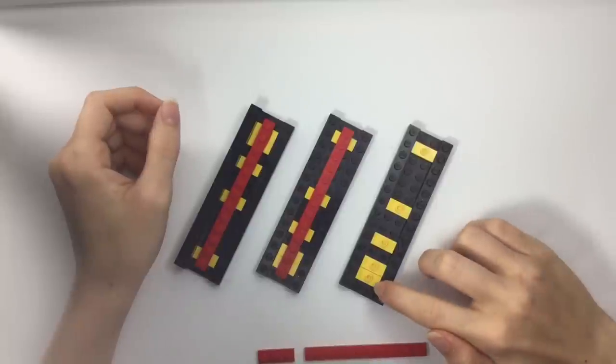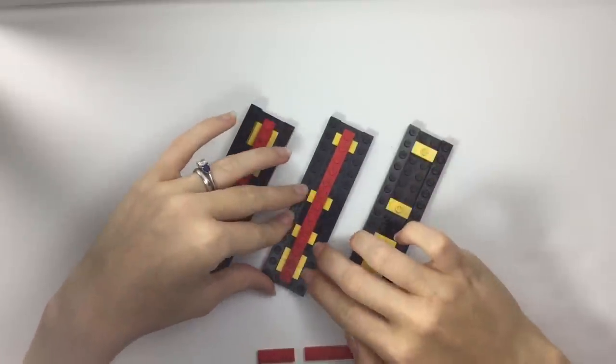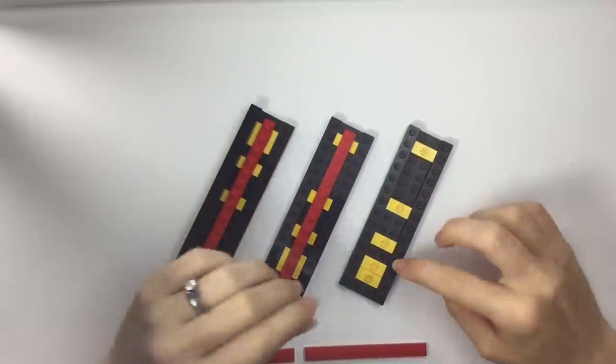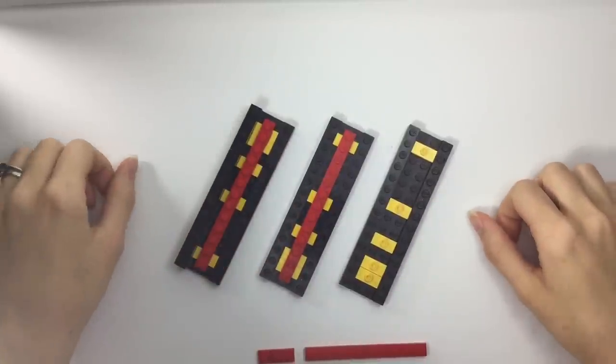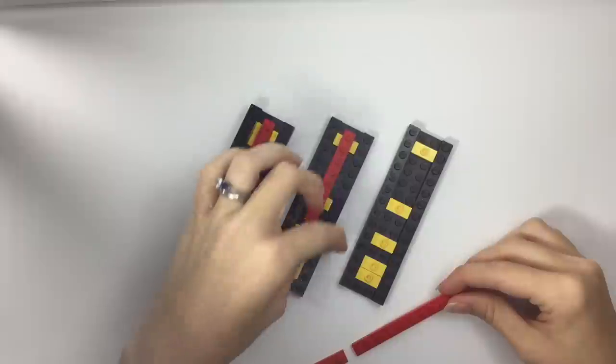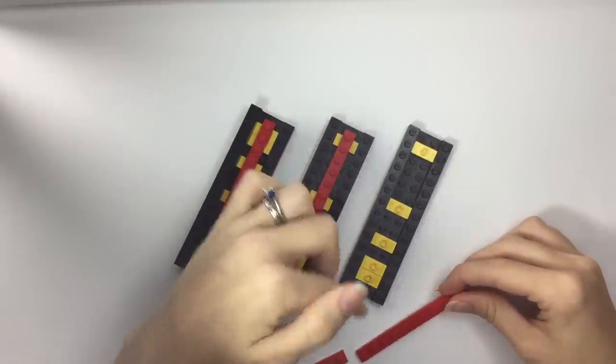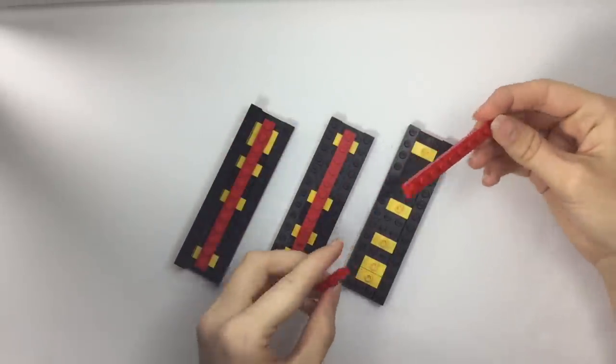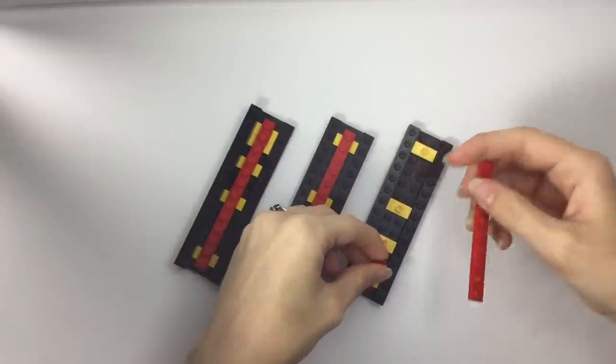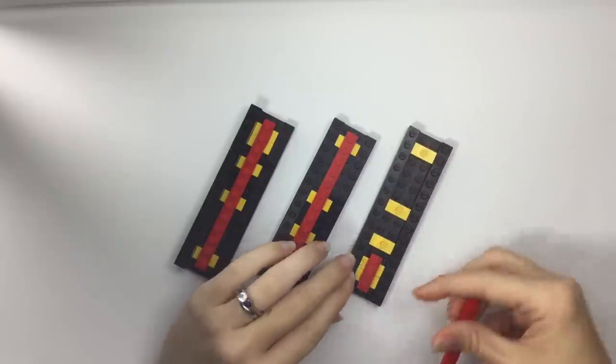Next, you want to place jumper plates in this center trough. You only need to use enough to give this center line stability without wasting too many jumper plates. The center line needs to be one stud less than the length. So in this case, because we used 14, this is 13, a 10 and a 3. And you're going to place them so that they're offset by half a stud.